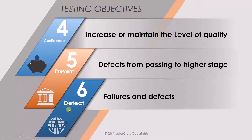The sixth point is to detect failures and defects — this is why we do testing. To prevent defects from passing on to a higher stage, the way we do it is to detect failures and defects. So the objectives are: to increase confidence in the quality of the product, prevent defects from passing on to a higher stage, and to detect failures and defects.